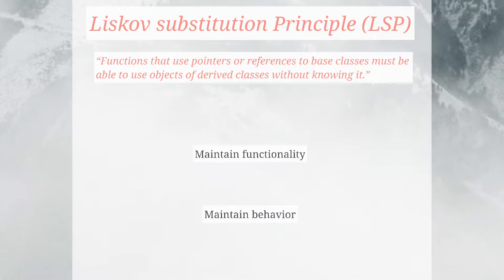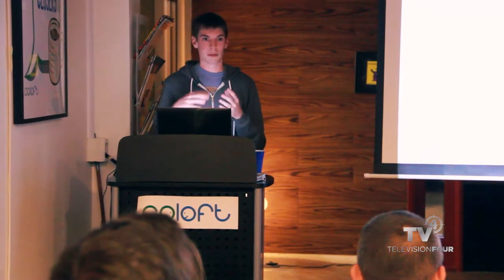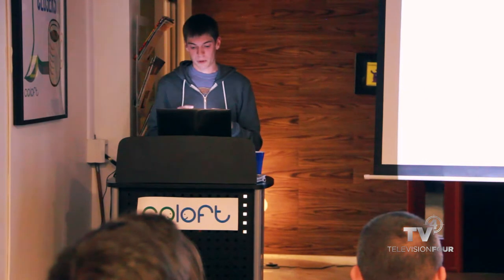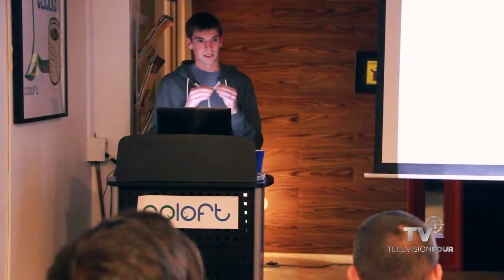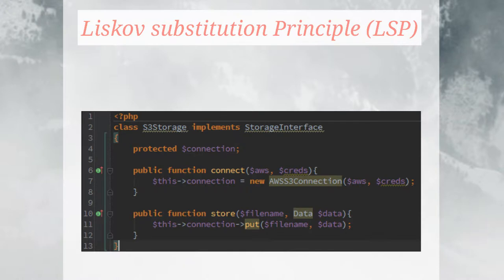The next principle is the Liskov Substitution Principle: 'Functions that use pointers or references to base classes must be able to use objects of derived classes without knowing them.' Essentially, if you have a parent class and child classes, you should be able to use those interchangeably. You want to maintain your functionality and behavior within classes that should be related. Back to the S3 storage class — say we have to connect to AWS before we can actually upload anything. So we have a connection variable, a connect function to connect to AWS, and then a store function. Somewhere in our code we'll call connect and then call store.